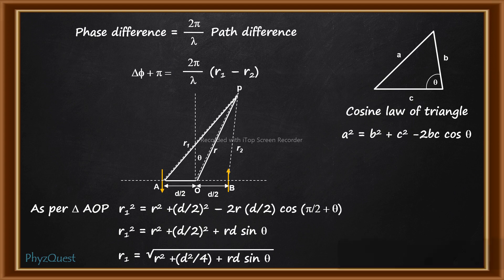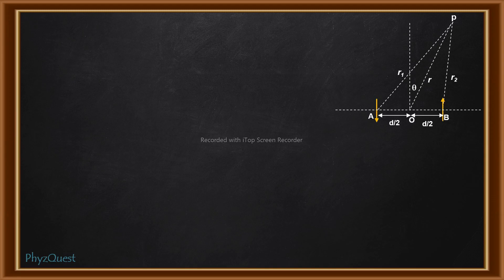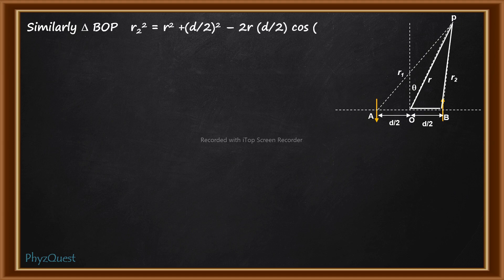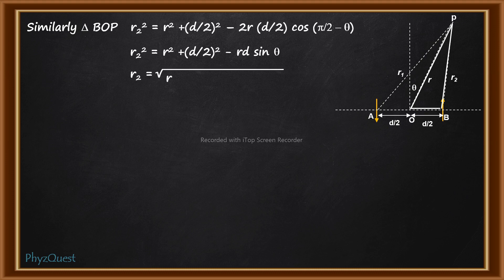Now calculating r2 using triangle BOP and the same cosine law: r2² = r² + (d/2)² − 2r(d/2) cos(π/2 − θ). Since cos(π/2 − θ) = sin θ, this gives r2² = r² + d²/4 − rd sin θ. Therefore r2 = √(r² + d²/4 − rd sin θ).